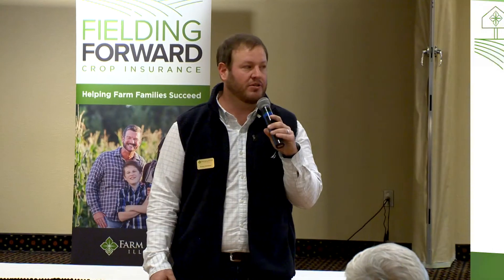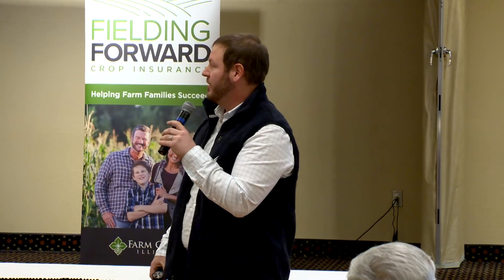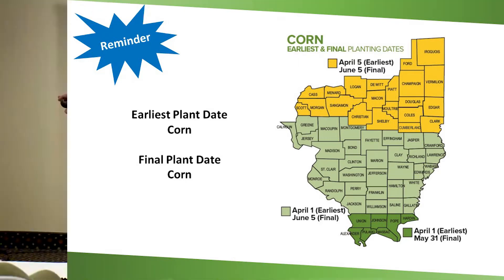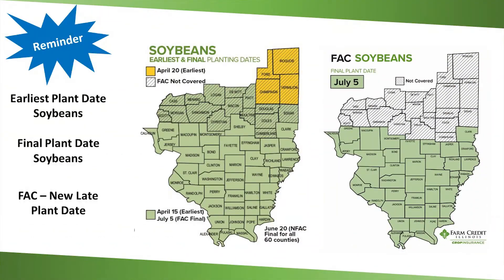We're moving on to some key reminders as we go forward into the growing season. Talking about early plant dates on corn — these early plant dates are based for your multi-peril replant. Planting before April 5th, which covers this area for corn, means you forego your replant endorsement. Late plant is June 5th for a lot of this area. Same goes for soybeans: this area is April 15th, and final plant date would be June 20th. This only affects your replant endorsement for your multi-peril policy. There are also FAC dates — following another crop — which is not eligible in these counties; that's basically just double-crop beans further south.